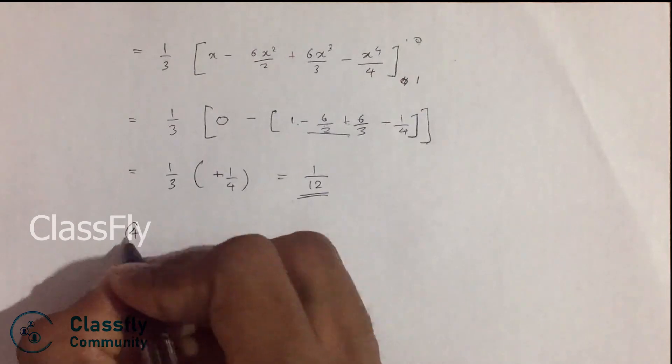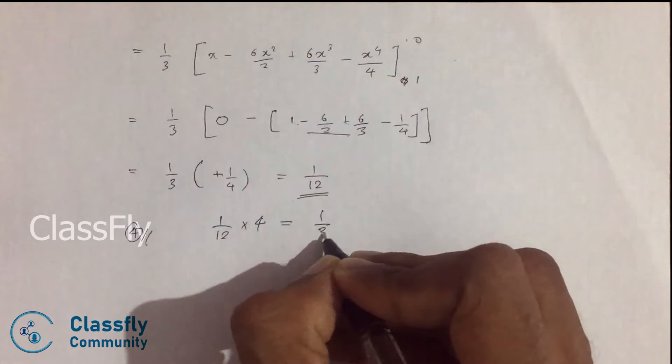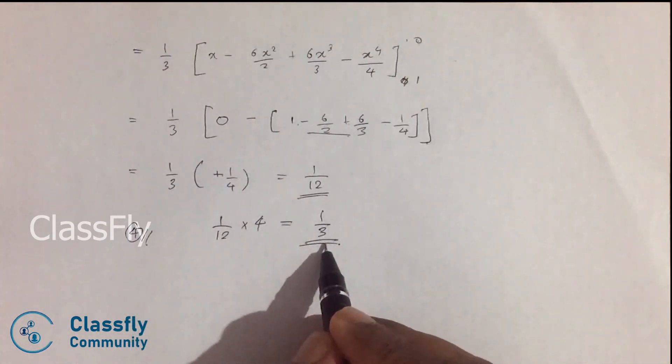Now we have to multiply this with 4, which is 1 divided by 12 times 4 equals 1 divided by 3. So this is our answer.